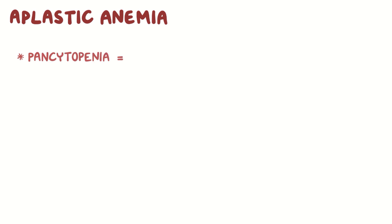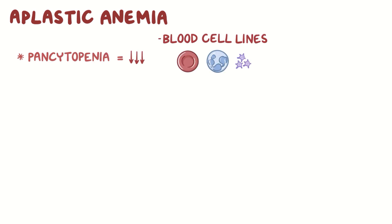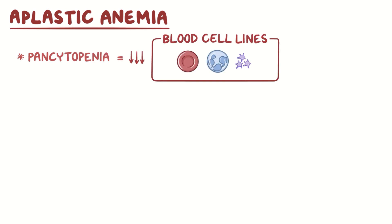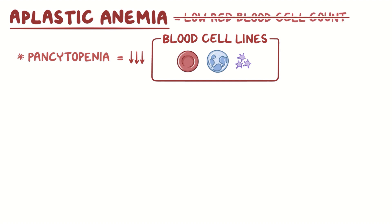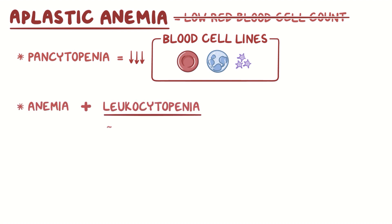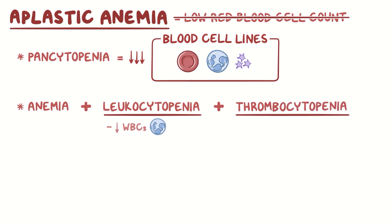Aplastic anemia is a pancytopenia, meaning all blood cell lines are decreased. So the term aplastic anemia, which just refers to low red blood cell count, is actually a misnomer. With aplastic anemia, there's actually anemia, as well as leukocytopenia, or low white blood cells, as well as thrombocytopenia, or low platelet levels.